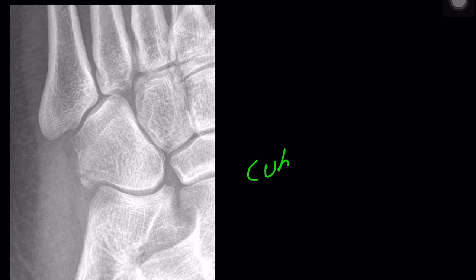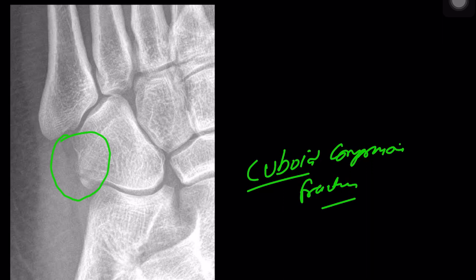The last radiological finding is cuboid compression fracture. In case of Lisfranc injuries, sometimes if you miss the diagnosis on the AP and lateral views, focus on the oblique view and rule out cuboid compression fracture — this indicates Lisfranc ligament injury. Then you should go for weight-bearing AP view, which will help in diagnosing the Lisfranc ligament injury.